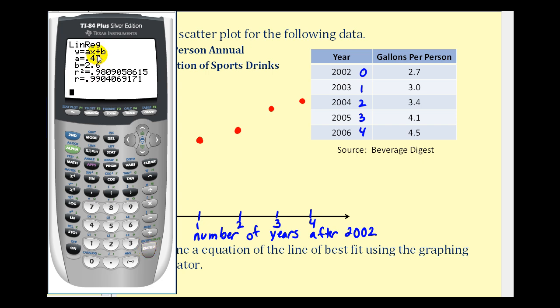So again, it's the same equation, but now if we press y equals, the equation is already in y one. Now if we press graph, it'll show the line on the scatter plot and we can see that the line is an excellent model for the given data.